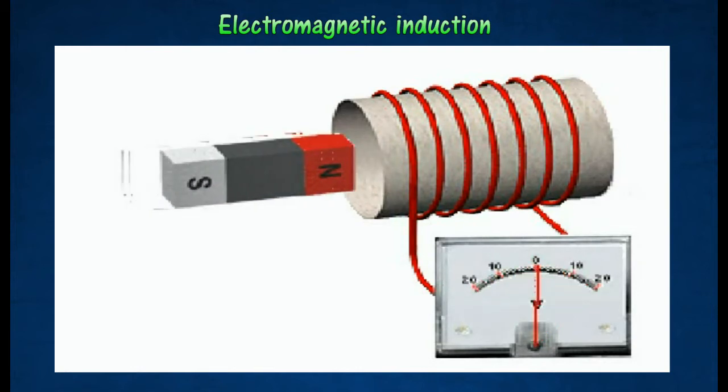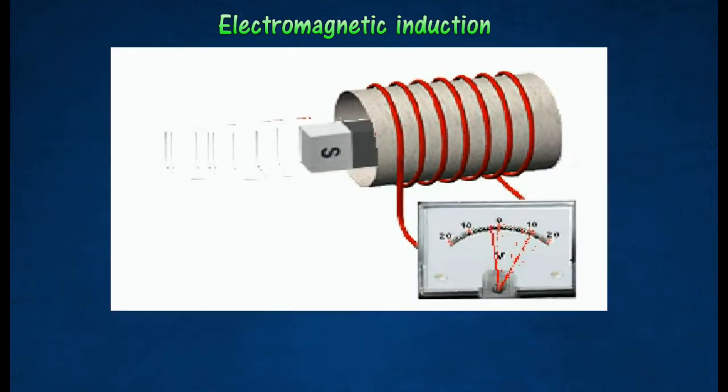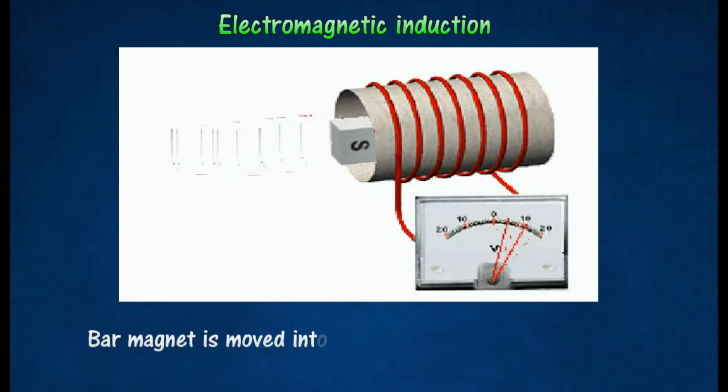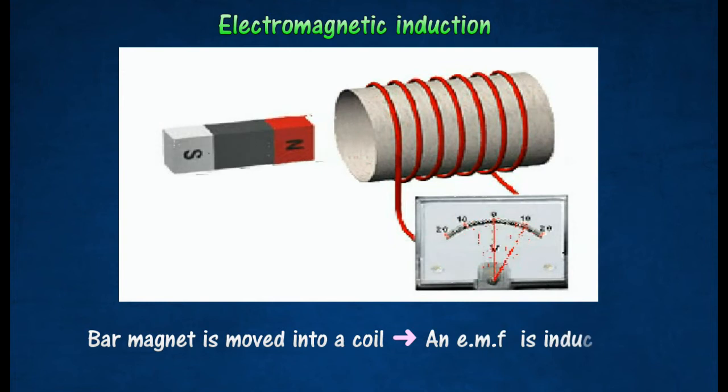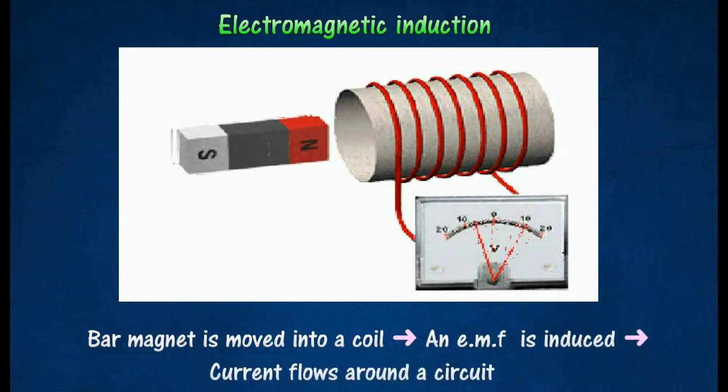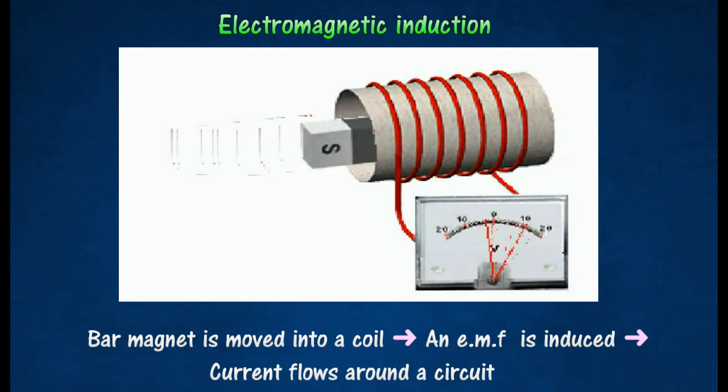The figure shows how induced electromotive force is produced. When a bar magnet is moved into a coil, an electromotive force is induced in the coil, causing a current to flow around a circuit, as indicated by the momentary deflection of the galvanometer needle.